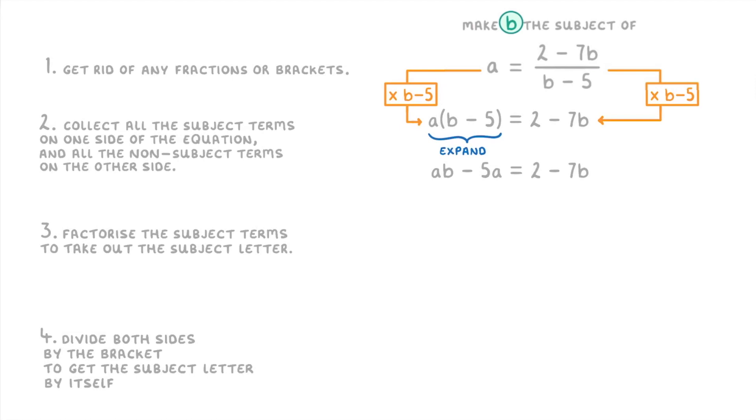Next we can move on to step 2, so collect all the subject terms that have a b in them on one side and all of the other non-subject terms on the other side. So if we decided to put the subject terms on the left again, then we'd need to move the 7b over to the left and the 5a over to the right. To move the 7b we need to add 7b to both sides, which would give us ab minus 5a plus 7b equals 2. And then to move the 5a over we need to add 5a to both sides to get ab plus 7b equals 2 plus 5a.